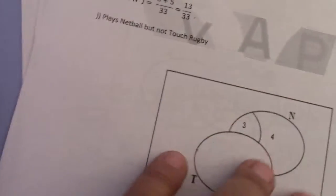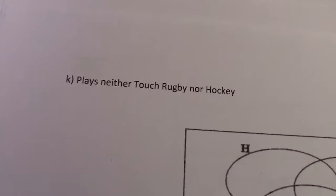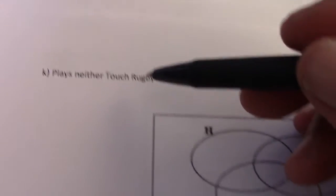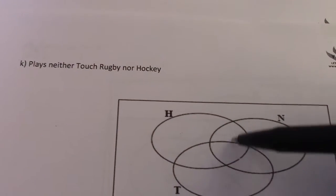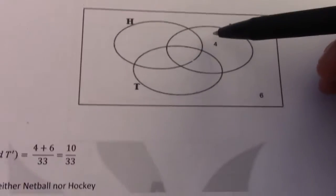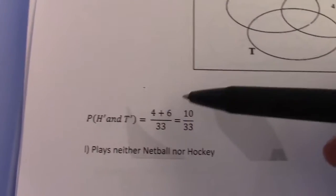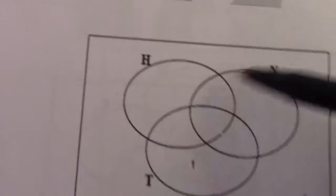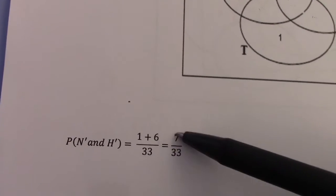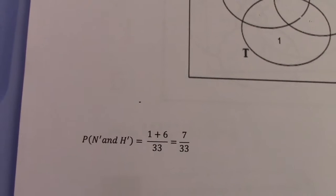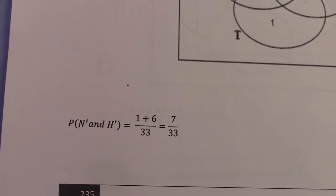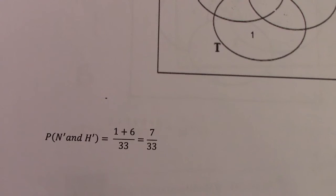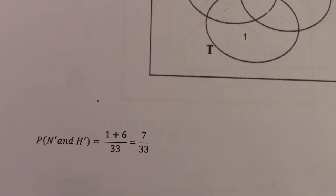Plays neither touch rugby nor hockey: I remove everything from T and from H, giving me 4 plus 6 over 33, which is 10 over 33. Plays neither netball nor hockey: I remove everything from hockey and netball, leaving 1 plus 6, which gives me 7 over 33. Hope you follow and understand — that's everything under Venn diagrams. All the best, God bless, bye.